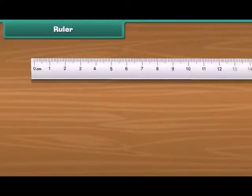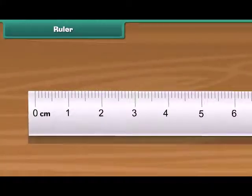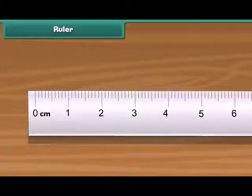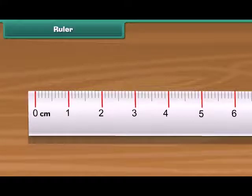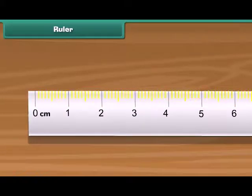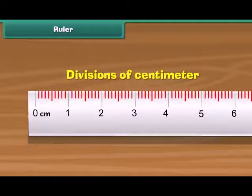You find many divisions on the margin of the ruler. Some lines are longer while others are smaller. The longer lines represent the number in centimeters. The small lines between two long lines represent divisions of centimeter.